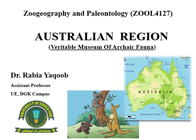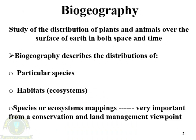The Australian region is also known as the Veritable Museum of Archaic Fauna. Before exploring the physiographic as well as biological diversity of the Australian region, let's have a look at the branch of biology which deals with the distribution of organisms — Biogeography. It is the study of distribution of plants and animals over the surface of the earth in space and time.